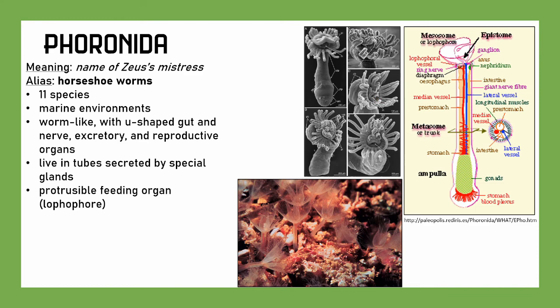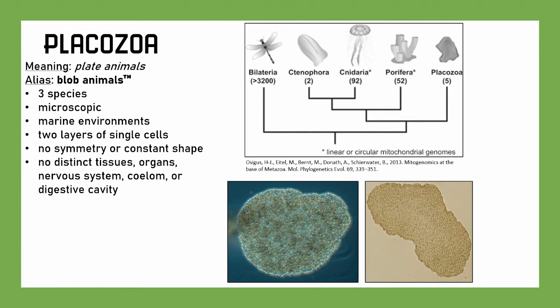We've made it to Placozoa, known as 'flat animals.' They don't have a common name, so I'm trademarking these as blob animals. There are only three species known. They're microscopic, found in marine environments. They're incredibly simple — just two layers of single cells, like sponges and cnidarians. There's no symmetry or constant shape, no distinct tissues, organs, nervous system, coelom, or digestive cavity. They're just essentially blobs. These are probably the simplest animals — even simpler than sponges. They're the most basal primitive animal you can get and still be an animal.